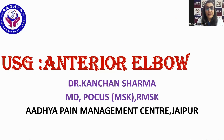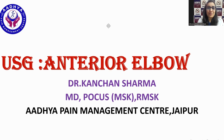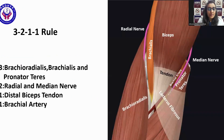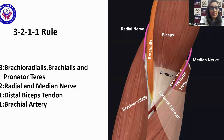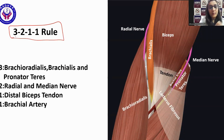Hello friends and welcome to my channel. Today we will be learning a very interesting tip in order to remember what structures are present in the anterior elbow. It is called the 3-2-1-1 rule.